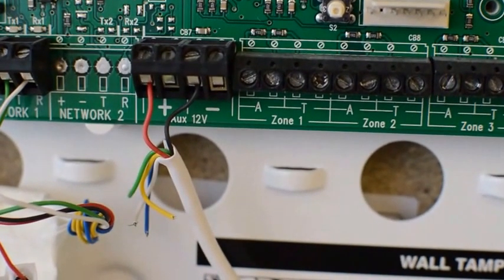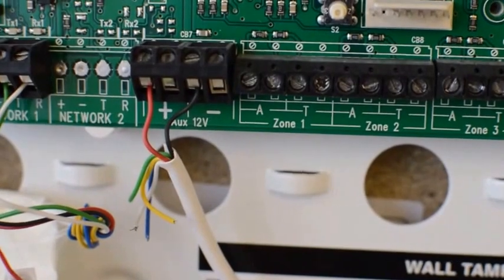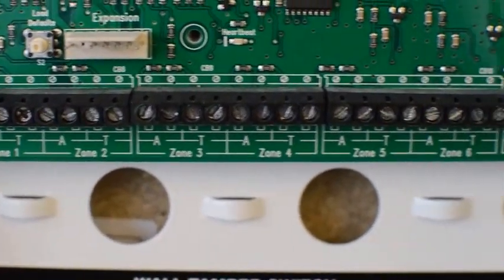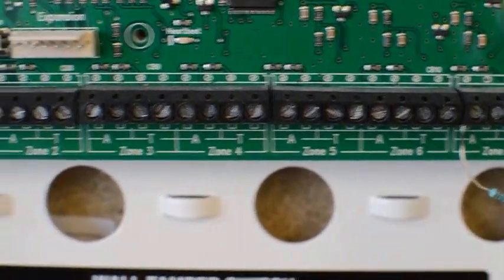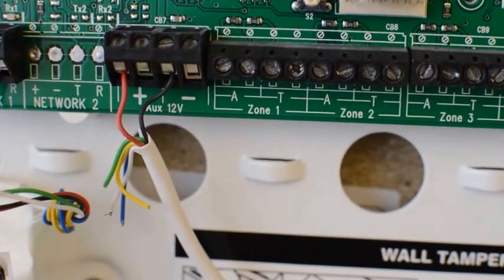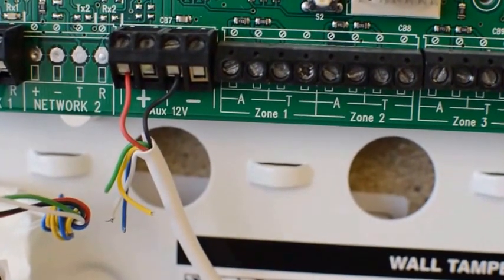Now you can see this is a Texacom panel. I've got zone one, zone two, zone three and zone five, six and seven. Then of course, the last one will be eight. Obviously you can expand this panel and connect extra zones.